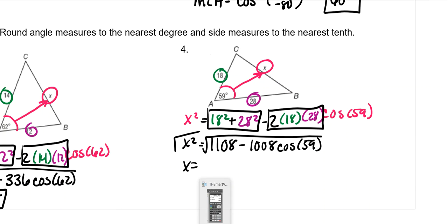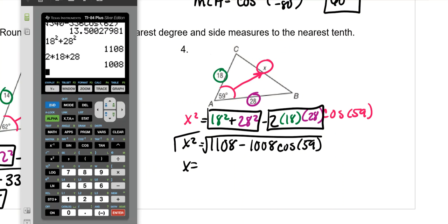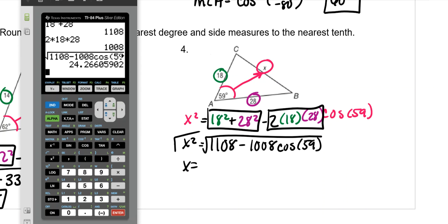And then square root both of those, and x will be, square root 1108 minus 1008 cosine of 59. And that gives you 24.26, which rounds to 24.3.